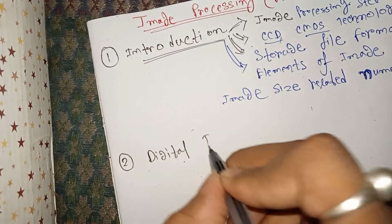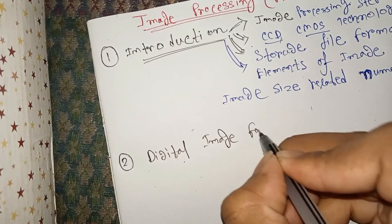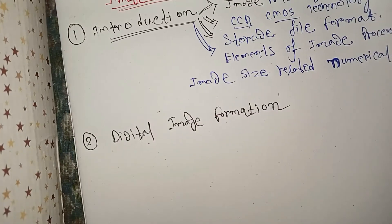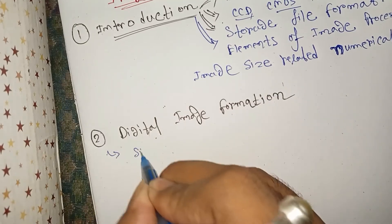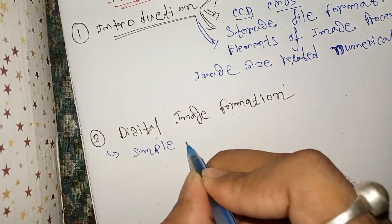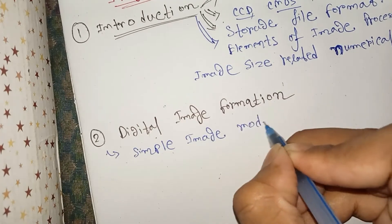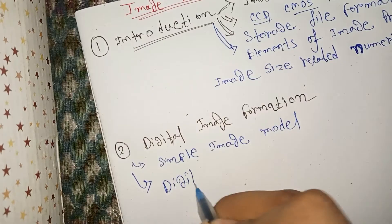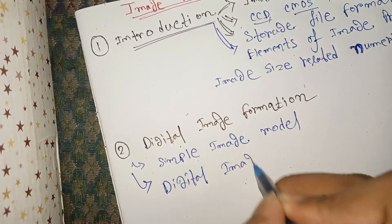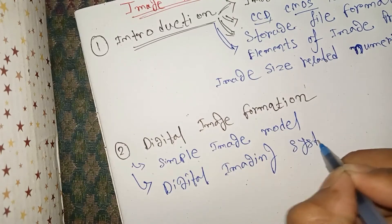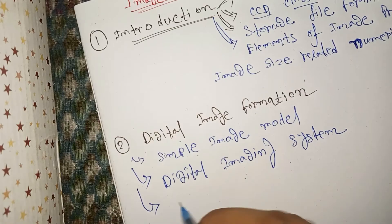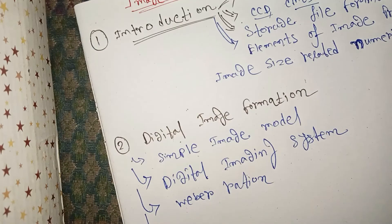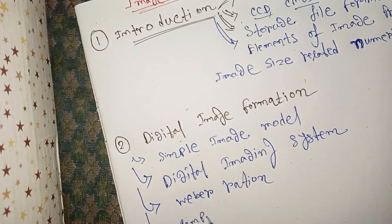The second chapter is Digital Image Formation. Important topics in this chapter include the simple image model, which is the most important topic, the digital imaging system, weaver ratio, and components of a digital camera.